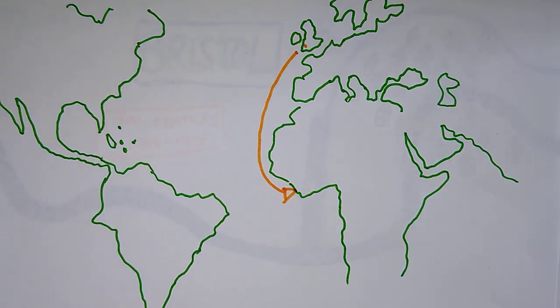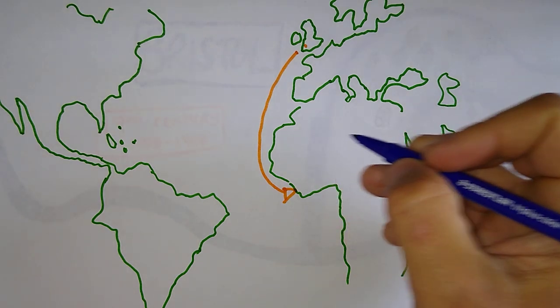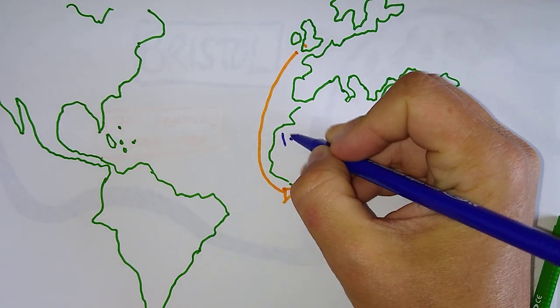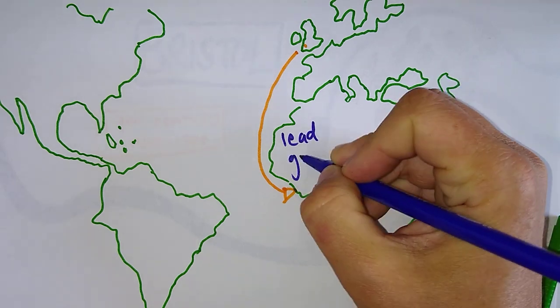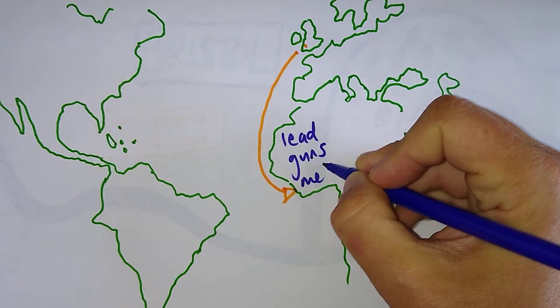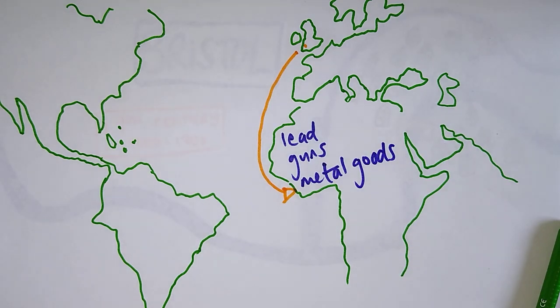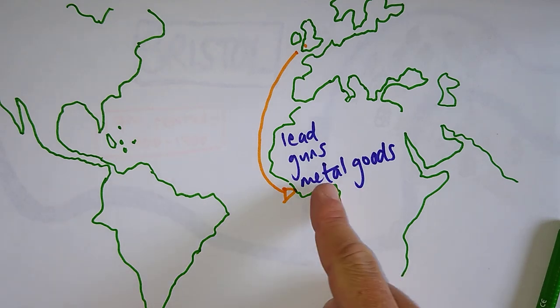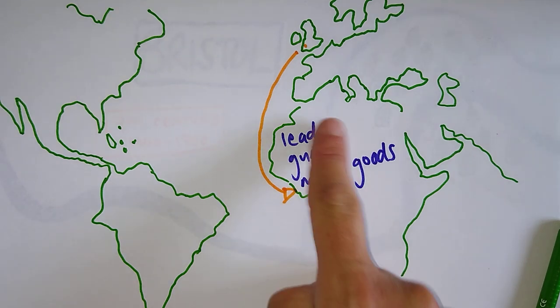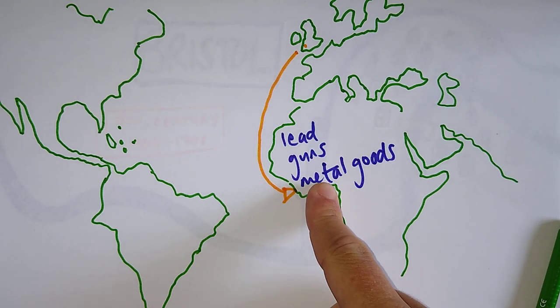And in West Africa, they were taking products which West Africans at this time did not have. So they were taking lead, guns, and metal goods. Pots, pans, guns, metal stuff.